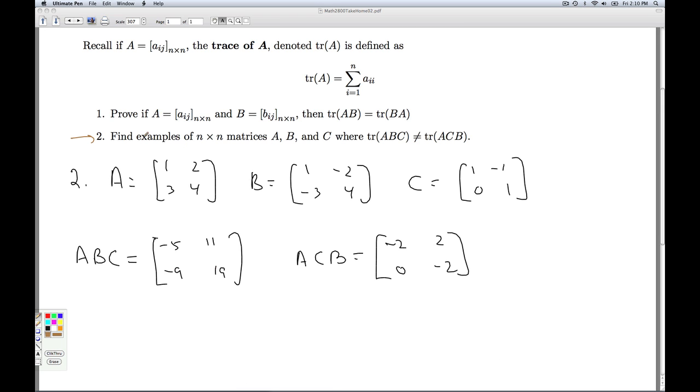Okay, for number two, we're to find examples of matrices A, B, and C, where the trace of the matrix ABC is different than the trace of the matrix ACB. So even though you can reverse two factors like that, you can't go rearranging factors willy-nilly and get the same trace.